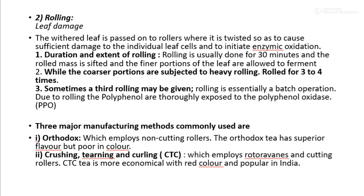Rolling causes leaf damage: the withered leaf is passed onto the rollers where it is twisted so as to cause sufficient damage to the individual leaf cells and initiate enzymatic oxidation. Rolling is usually done for 30 minutes. The rolled mass is sifted, the finer portion is allowed to ferment, while the coarser portions are subjected to heavy rolling, repeated 3 to 4 times. Rolling is an essential batch operation.